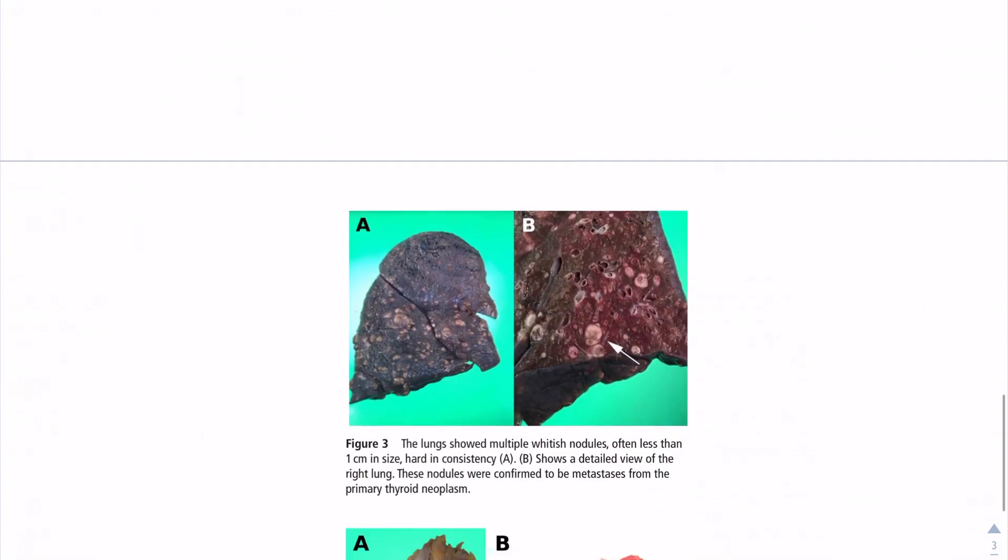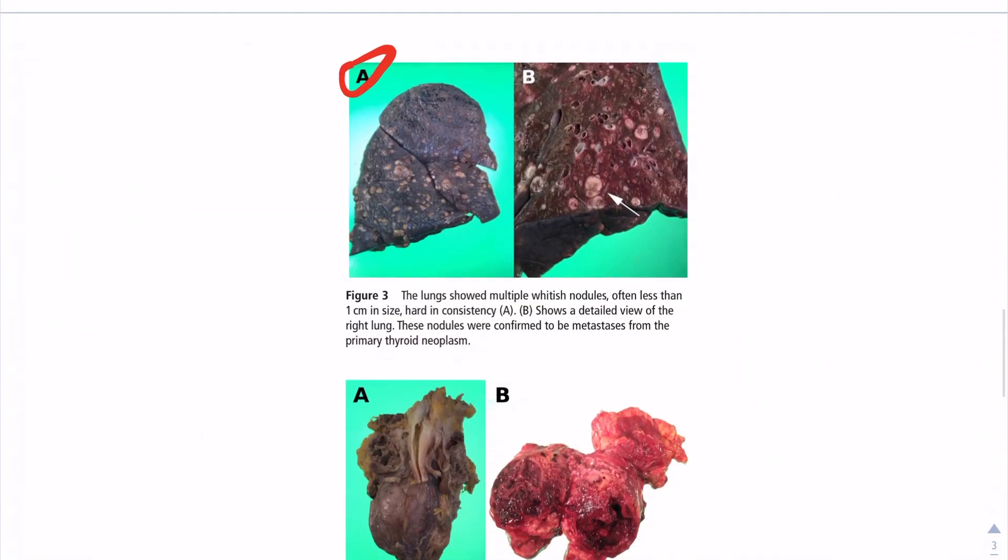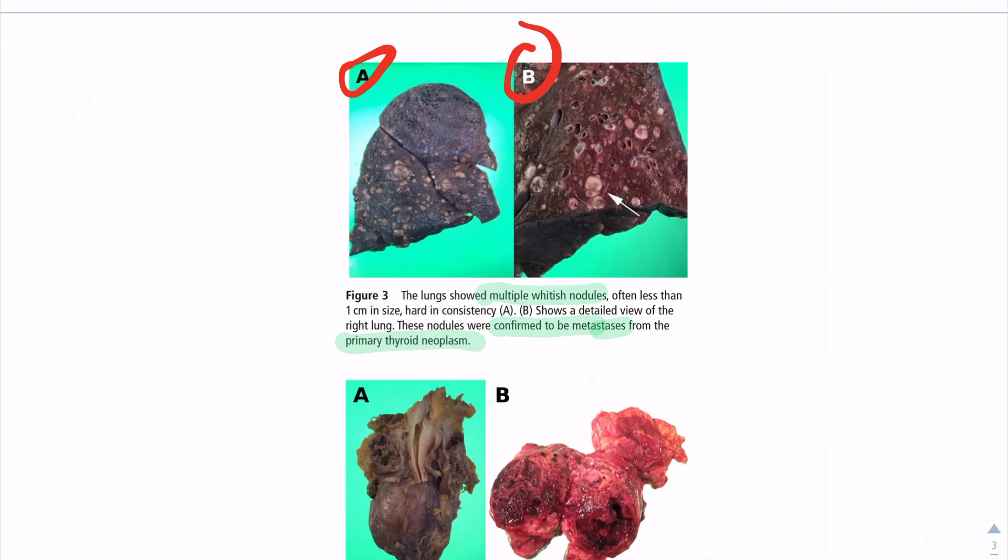The grade was 4. As you can see in A here, we have a lung that showed multiple widest nodules, usually less than one centimeter. And in B, you can see a detailed view of the right lung. And then this was confirmed to be metastasis from the primary thyroid neoplasm.